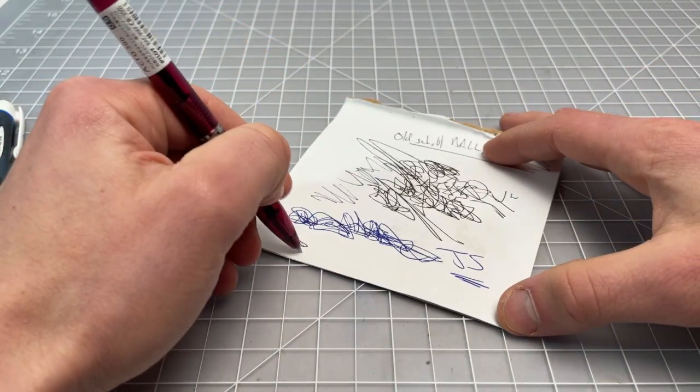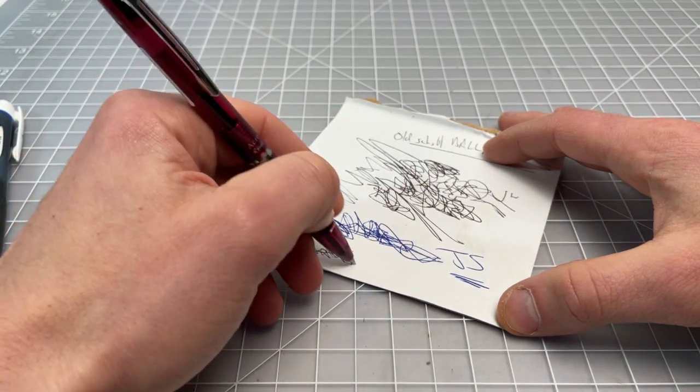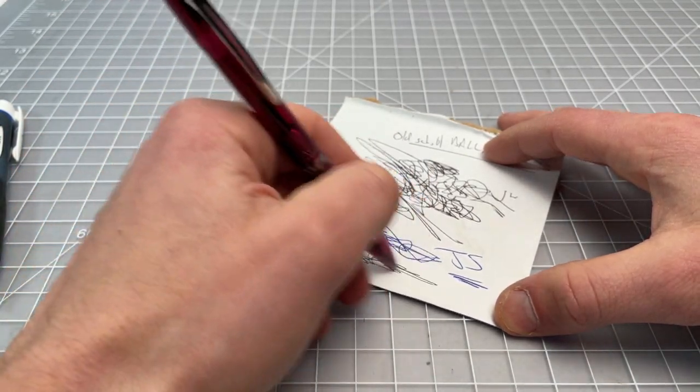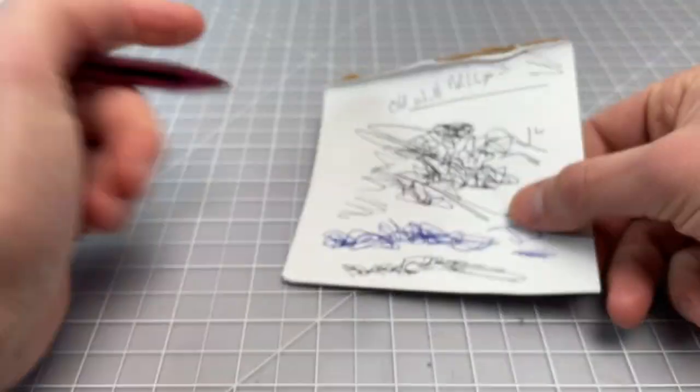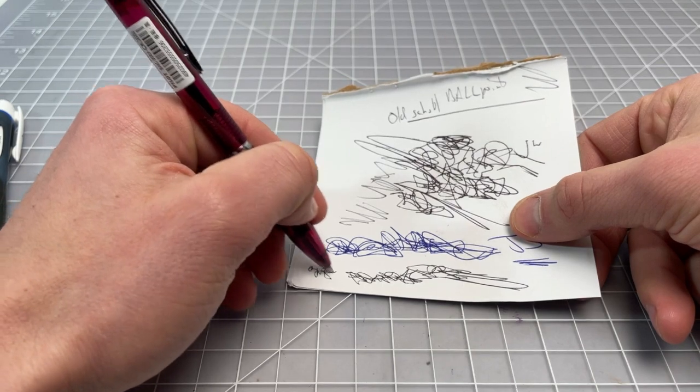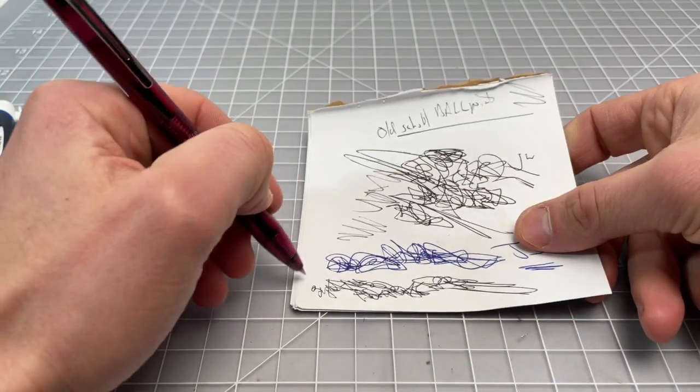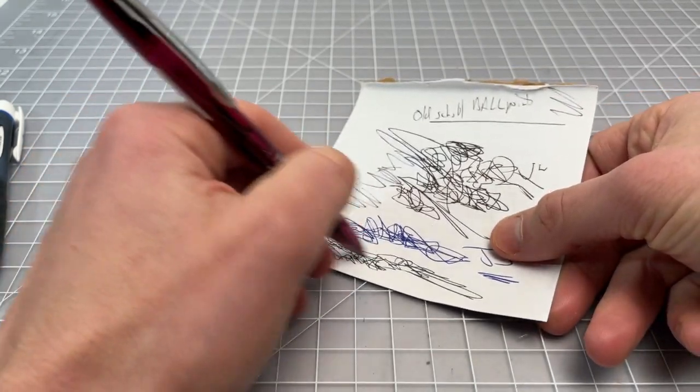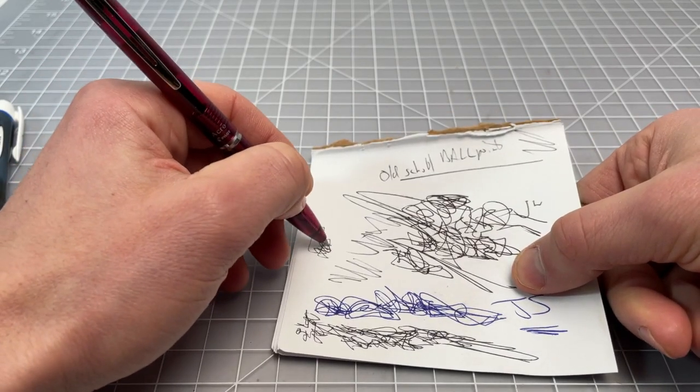Lastly, we have the Acro and this one is only a 0.5 millimeter. So it's a good deal thinner. Also nice and dark, really nice, clean writing, not quite as smooth as the other two, but the Acro ink isn't sold in a 1.0 millimeter. So it's not even going to be an apples to apples comparison. It's quite smooth for a 0.5 millimeter ballpoint.